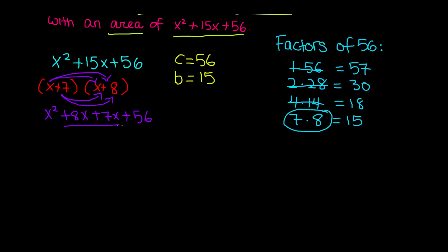Combine like terms, and we get x squared plus 15x plus 56, which is the original polynomial that we have up here. So our factorization is correct.